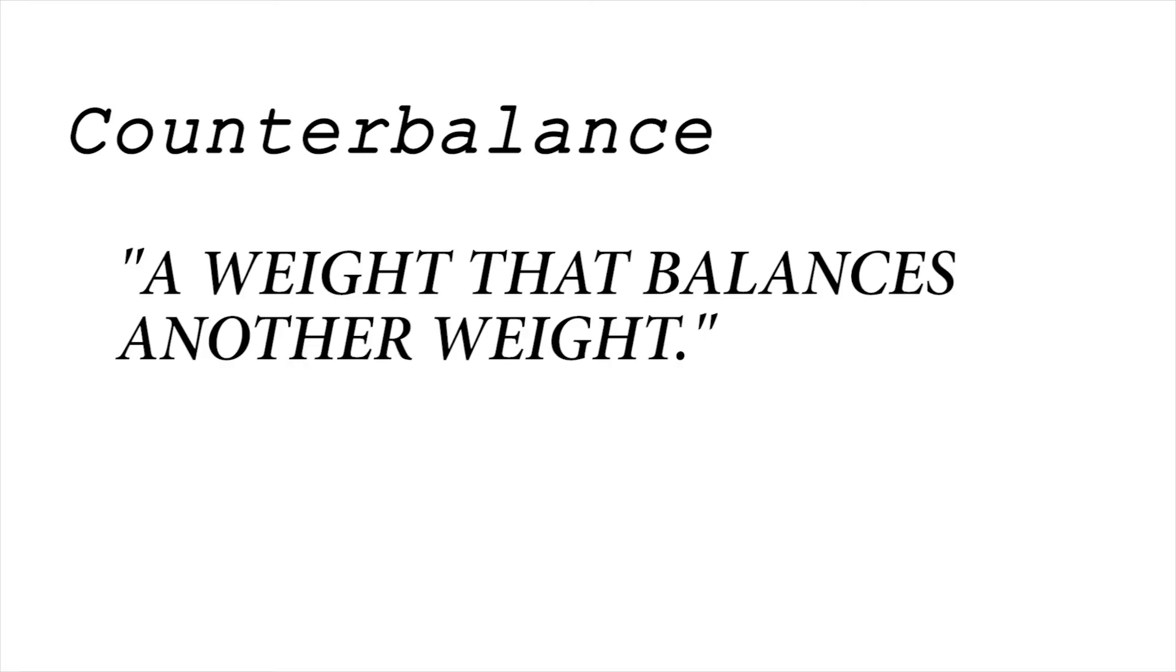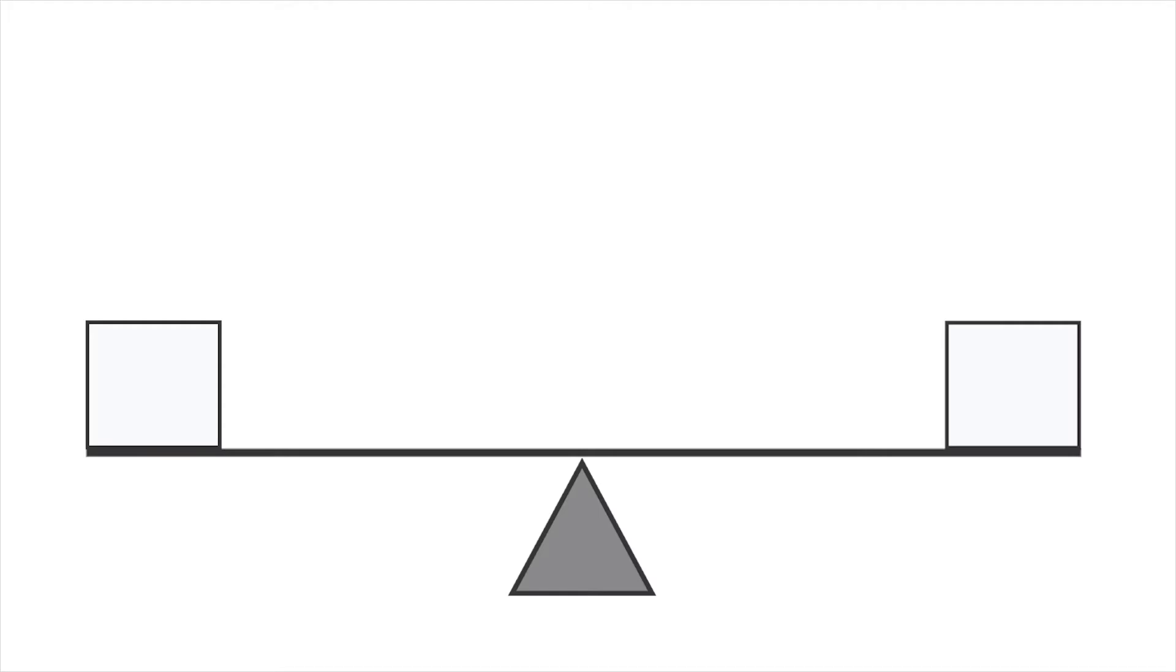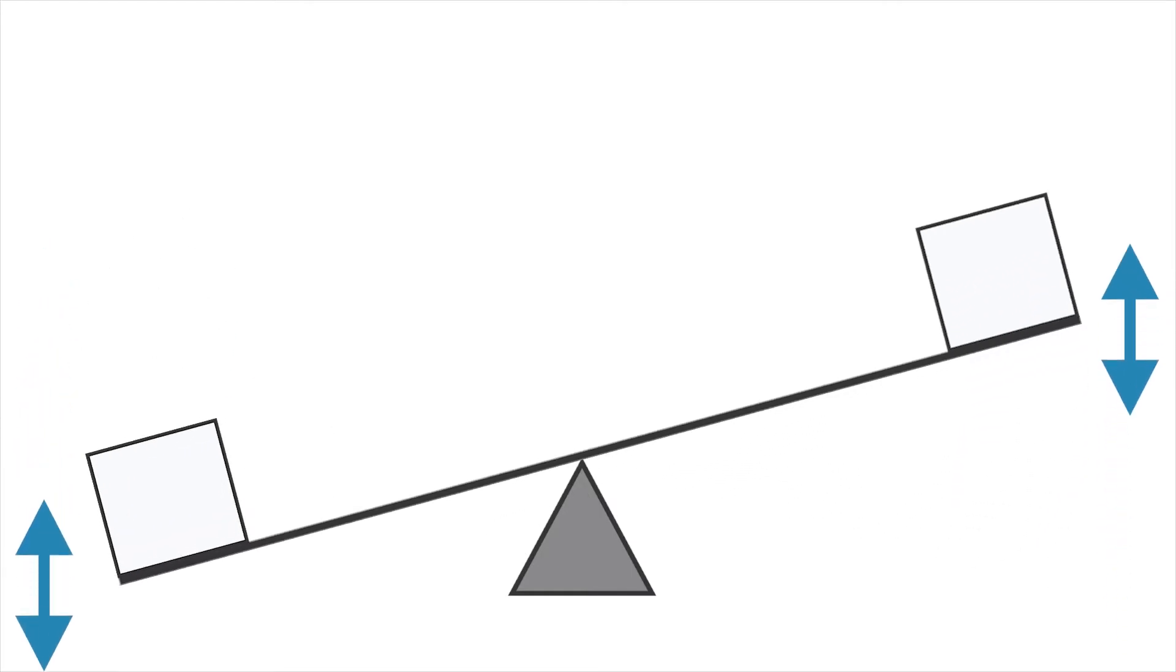Webster defines counterbalance as a weight that balances another weight. A simple example of this principle is the seesaw. If the weights on each side are identical, they will be balanced, and you can easily raise or lower either side.